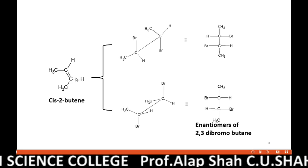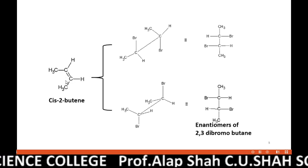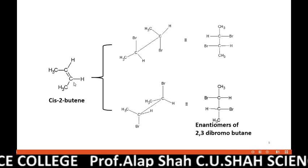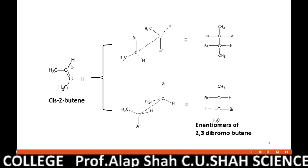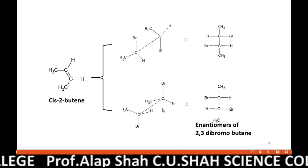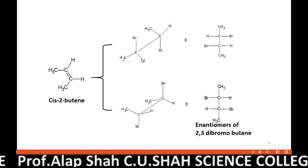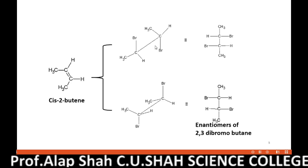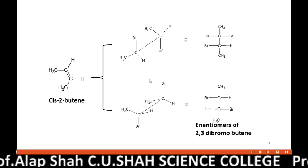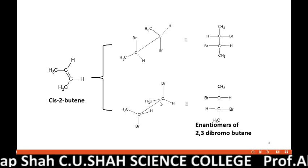Another possibility: to this carbon, if bromine is added from the plane below, then to this carbon bromine will be added from the plane above. In that case, we would get another isomer. The mathematical probability of these two pathways is equal. As a result, we are getting a pair of enantiomers as product.